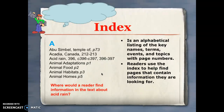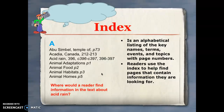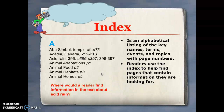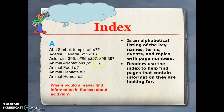The next type of text feature is an index. An index is usually listed in the back of the book and provides a listing of different names, events, terms, and things you might find in the story, along with where you can locate them using page numbers. All of these vocabulary words or key terms have page numbers listed right after them so that you would know where to find them. If I was to look up animal food, I would go to page 2 of my story.